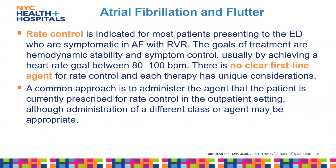Rate control is indicated for the majority of patients we see in the ER who are symptomatic with AFib. Goals of treatment are hemodynamic stability with symptom control and achieving a heart rate of 80 to 100. There's no clear first-line agent for rate control. A common approach is if a patient has a history of AFib, you can administer their home medication or trial a different one.